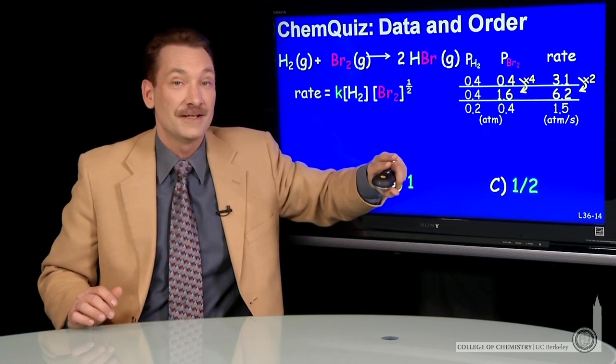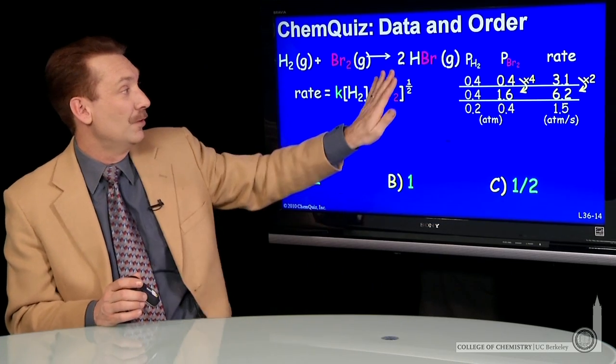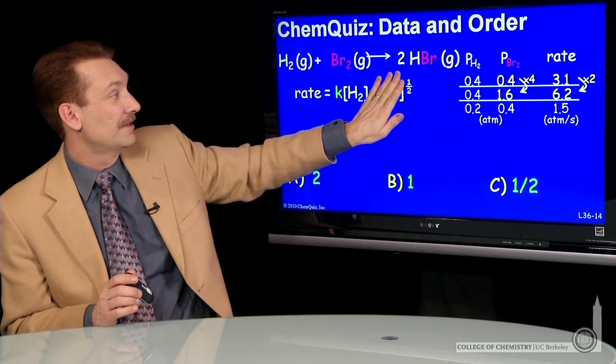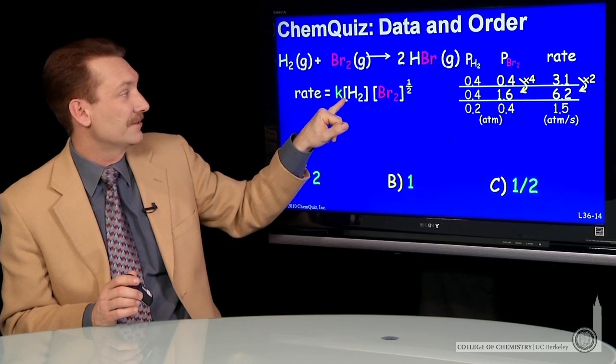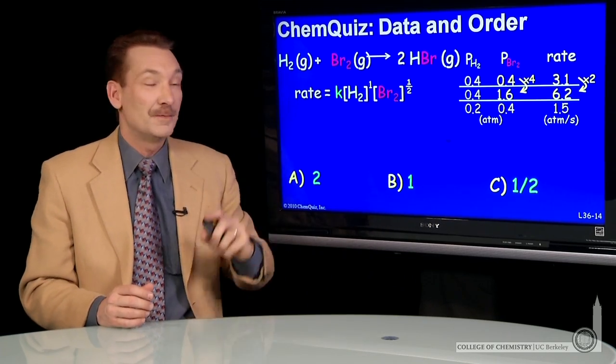I double the rate, holding the Br concentration constant. So that's constant, doesn't matter, folded into the rate constant. Doubling this doubles that, so that should be a power of 1.